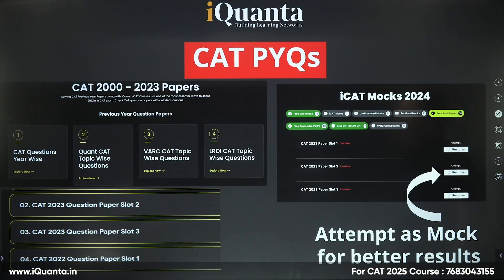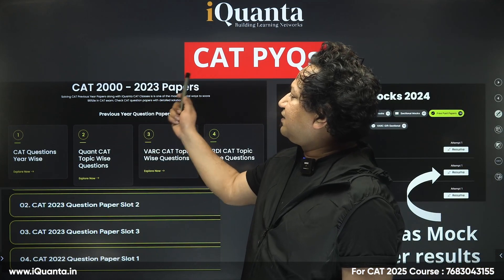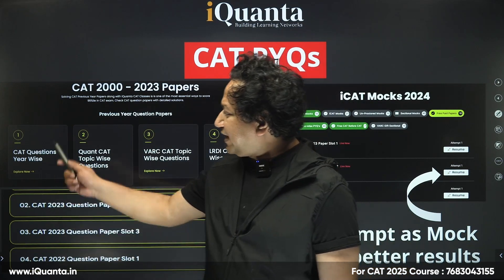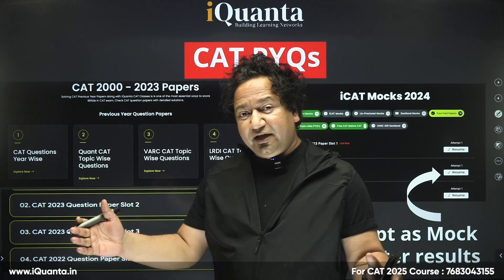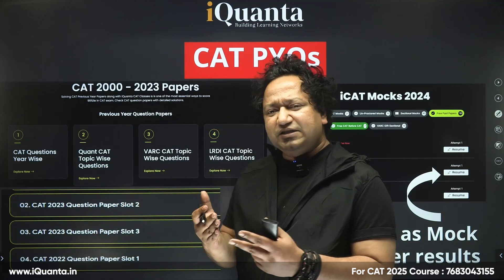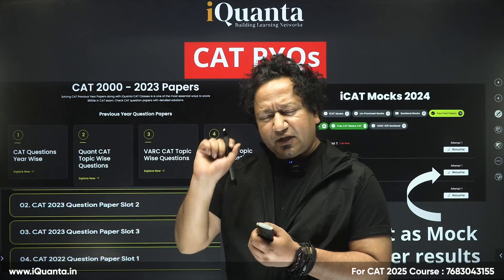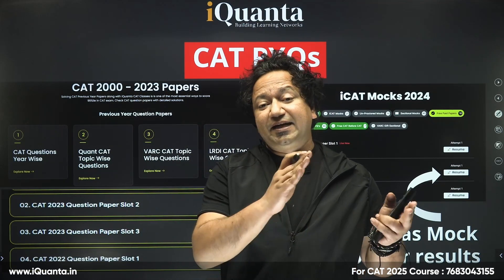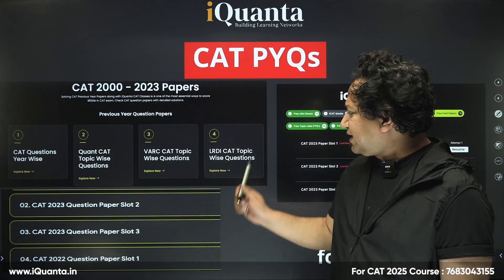Apart from that, if you go to iQuanta's website, you'll have access to all the papers from CAT 2000 to CAT 2023. There are four different options. First, you can go to CAT questions year-wise — self-paced, meaning there will be no timer limit. You just look at the questions and try to solve them with the proper textual solutions provided. Then there's Quant CAT topic-wise, VARC CAT topic-wise, and LRDI CAT topic-wise.